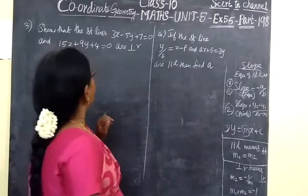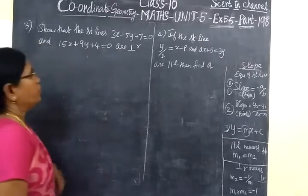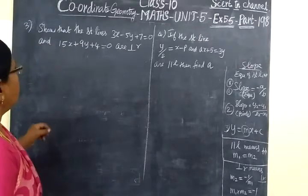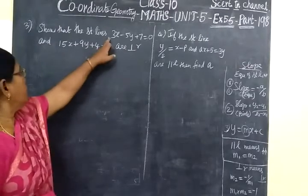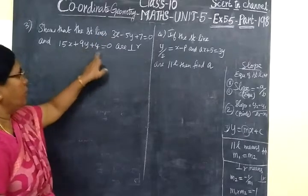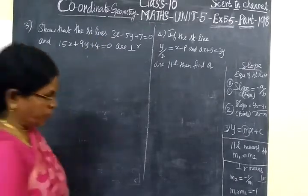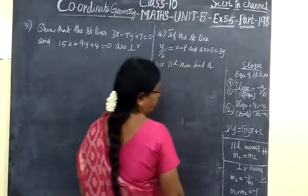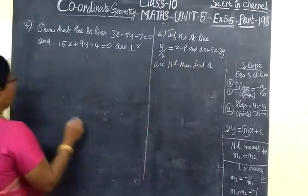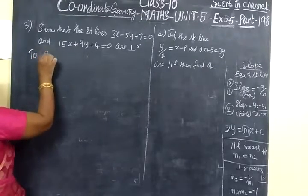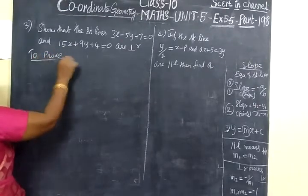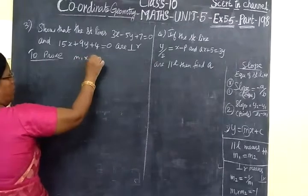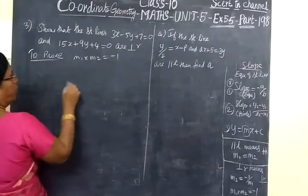Now in part 198, we see third and fourth sum. Show that the straight line and another straight line are perpendicular. For perpendicular lines, the condition is M1 M2 equal to minus 1. So we want to prove M1 into M2 equal to minus 1.